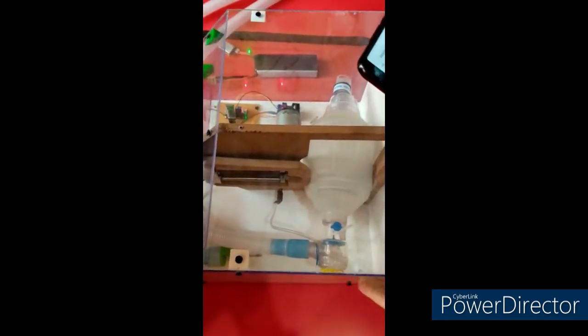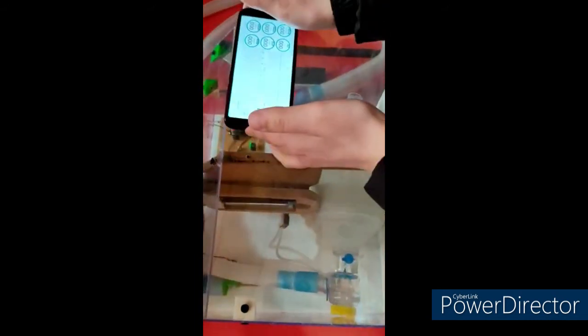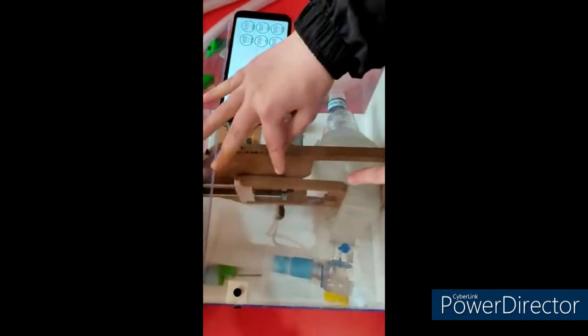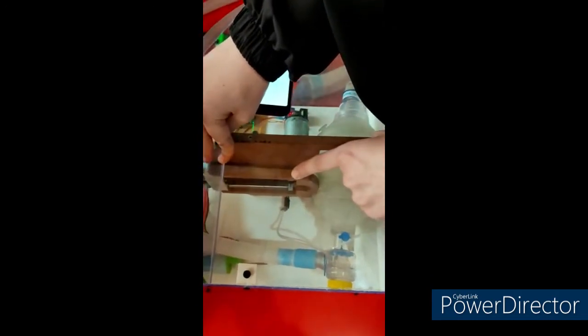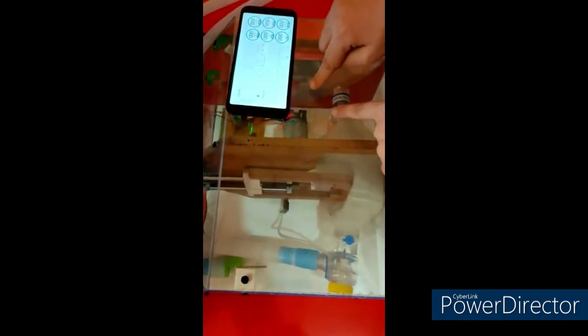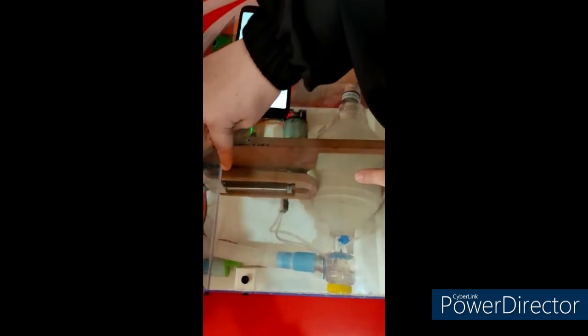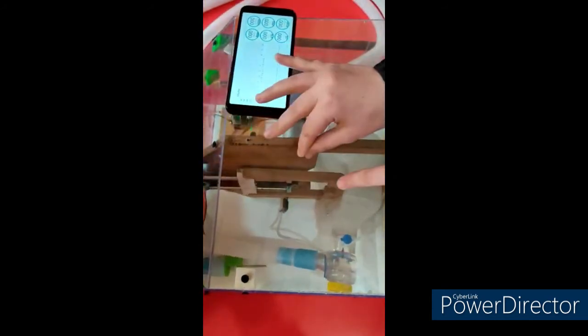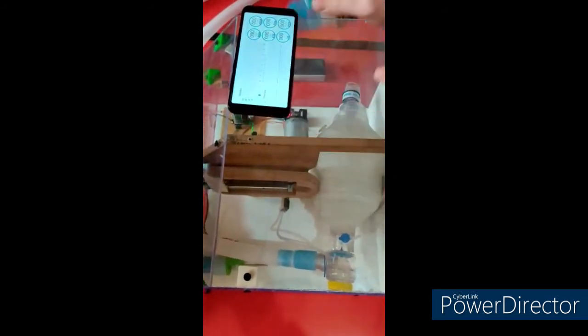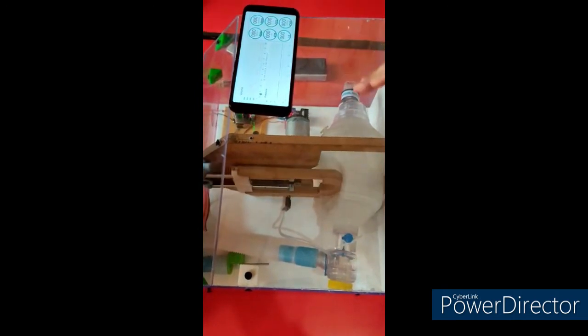In this project Hayat, we are using an Ambu bag which is used to generate pressure difference. This Ambu bag is compressed by a 3D printed actuator. You can see here is a 3D printed actuator that comprises of encoder, DC motor and linear gliders. This actuator we can move with the help of microcontroller according to the settings required by the patient.